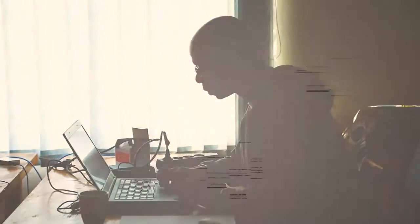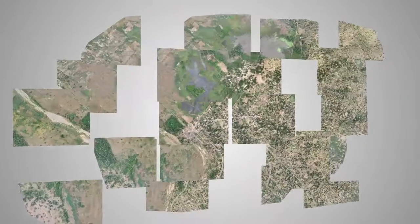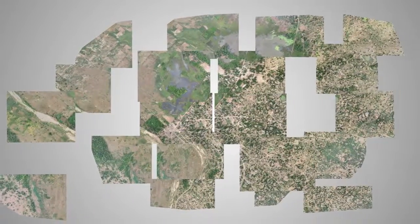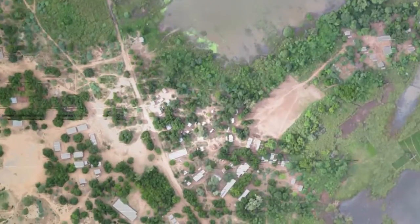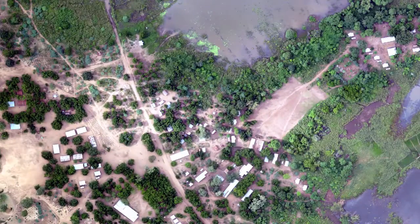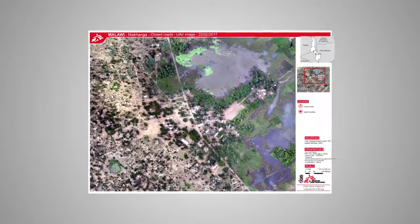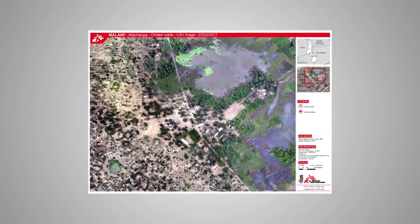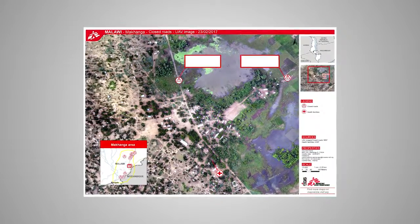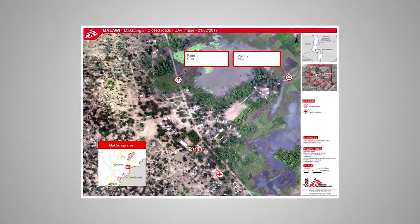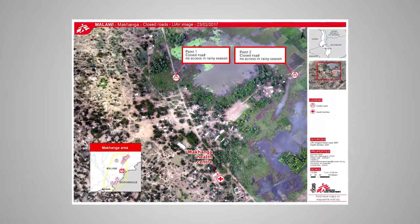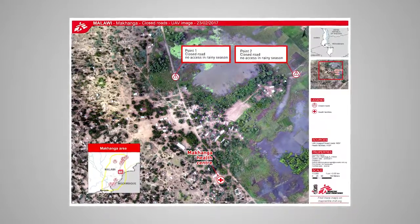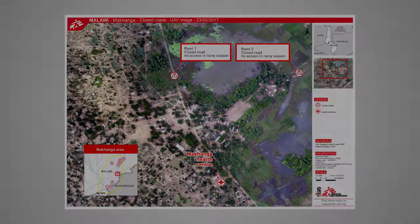At the end of this mission we will have many pictures of the area. We will try to get one big picture of the Makanga Island, and from this picture we will use our GIS software to digitalize all the access routes and roads, and find all the access points for our missions.